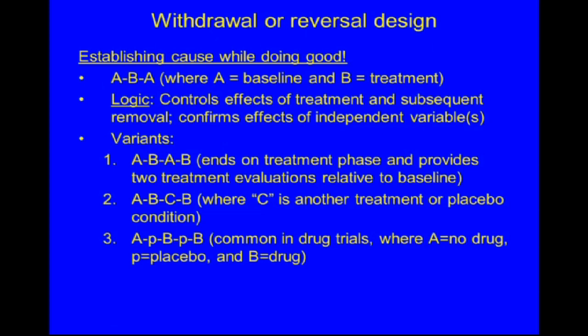It confirms the effects of the independent variables. Variants on the design include the ABAB, which has the advantage of ending on a treatment phase and providing two different treatment evaluations relative to baseline. There is also an ABCB design where C is another treatment or placebo condition, and in drug trials an A-P-B-P design where A is no drugs, B is the drug, and P is a placebo condition.